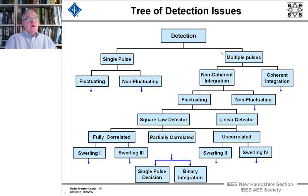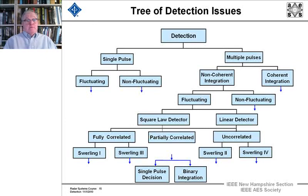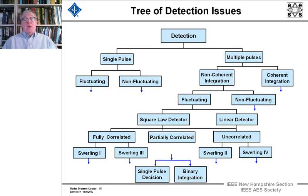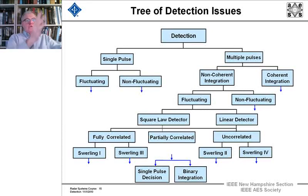You can also have the target fluctuating, and so that has to be taken into account. We could also have multiple pulses, and we can deal with them by adding them up non-coherently or coherently. This view graph is, so to speak, the table of contents for what we'll be doing in the rest of the lecture — showing how the pieces fit into this funnel diagram of the different detection processes.